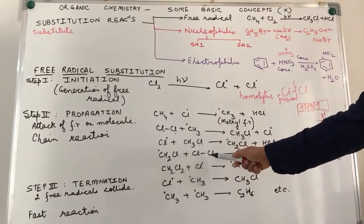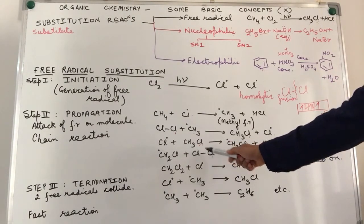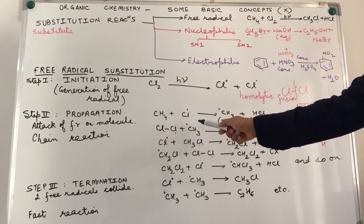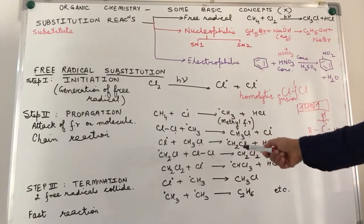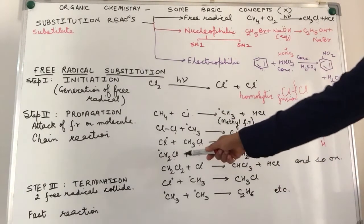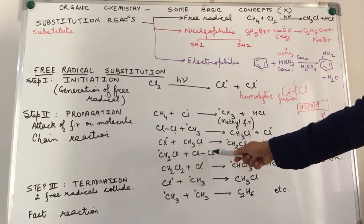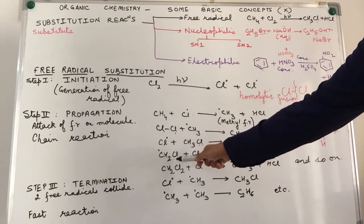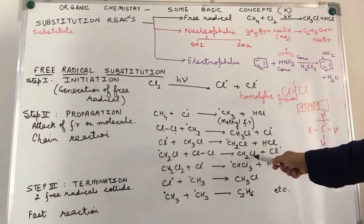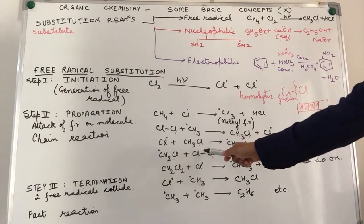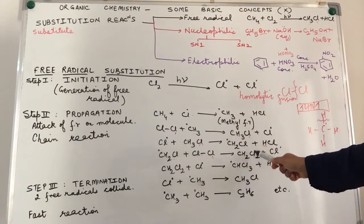So, what happens? It can either attack another chlorine molecule, it can attack another methane molecule, depending upon what it comes across. The next possibility that we have taken over here is it is attacking another chlorine molecule. Here, it takes up the chlorine, so we have CH2Cl2, basically chlorine atom becomes attached to it.